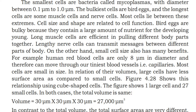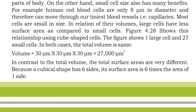Most cells are small in size in relation to their volumes. Large cells have less surface area compared to small cells. Figure 4.28 shows this relationship using cube-shaped cells — 1 large cell and 27 small cells. In both cases the total volume is the same: 30 μm × 30 μm × 30 μm = 27,000 μm³.